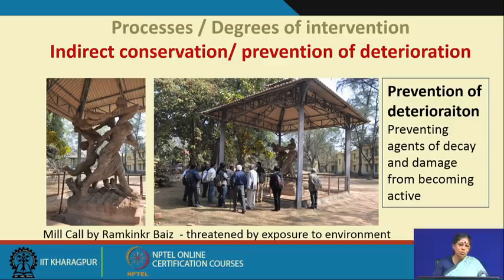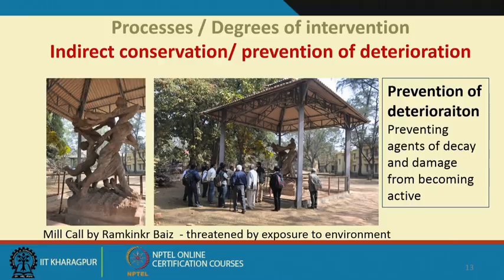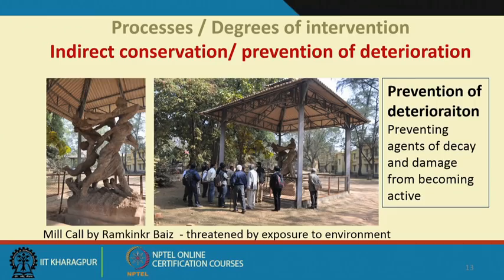This is one case of minimum intervention, which we call indirect conservation, because it is not touching the sculpture itself but preventing the process of deterioration and preventing agents of decay and damage from becoming active — in this case, mainly rainwater. One might ask why not take them inside a museum. The answer is that context is also very important: the site, surroundings, and nature are integral. Taking them inside could save the structure but would lose its context.